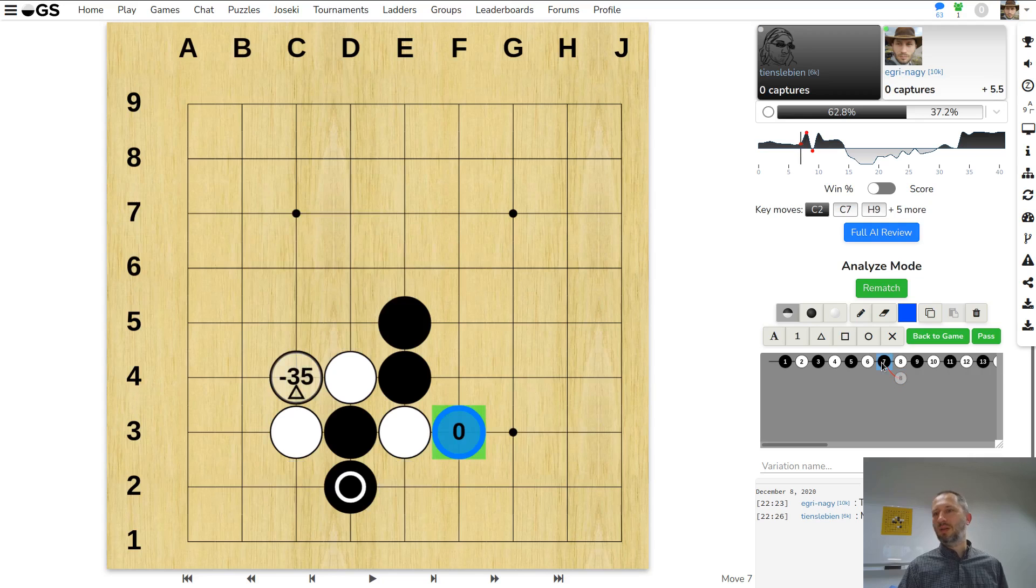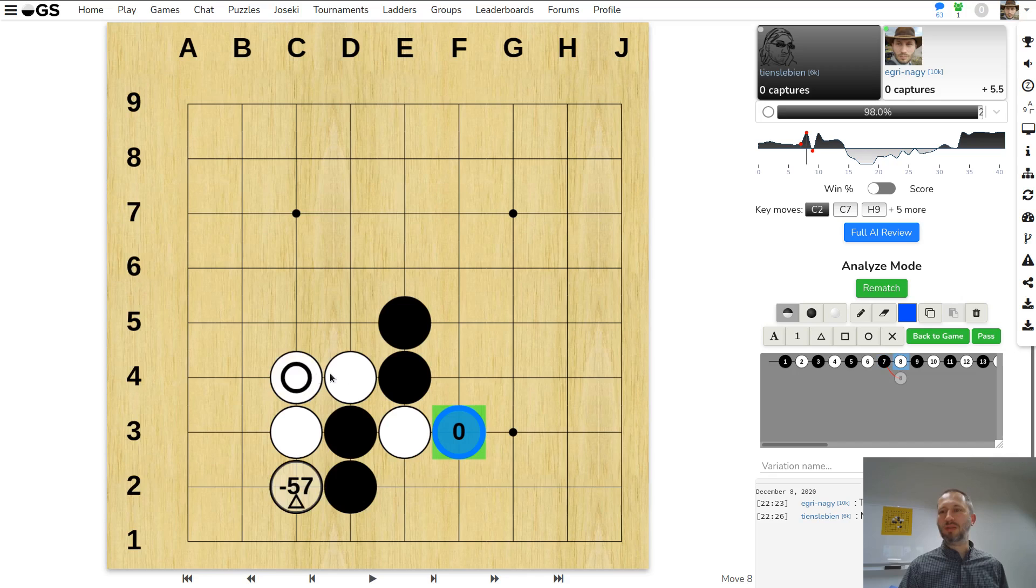But it shows the actual game move as well. This with the black outline is the move I made, and I actually lost 35 percent of my winning chance. That's why the sudden jump.